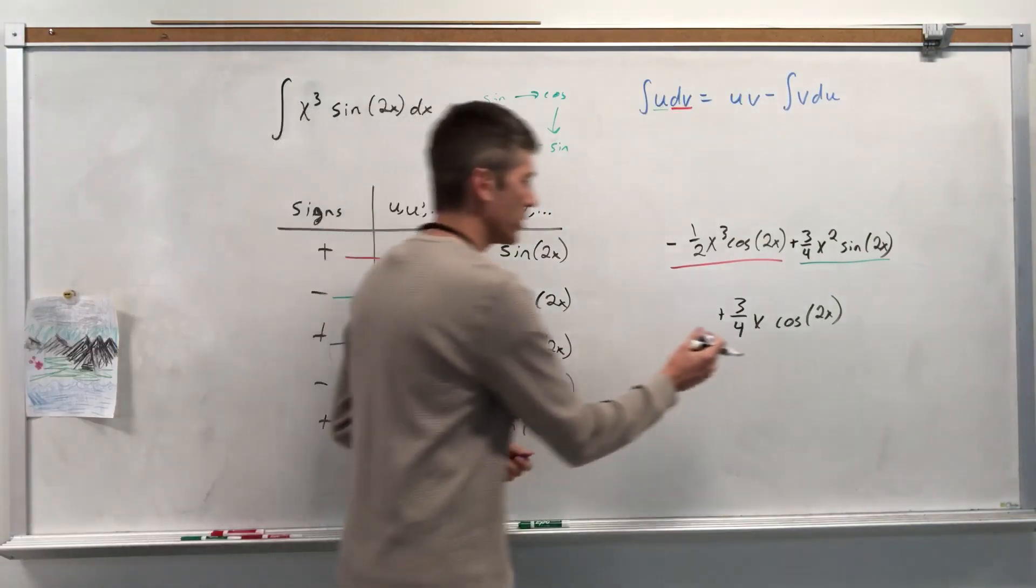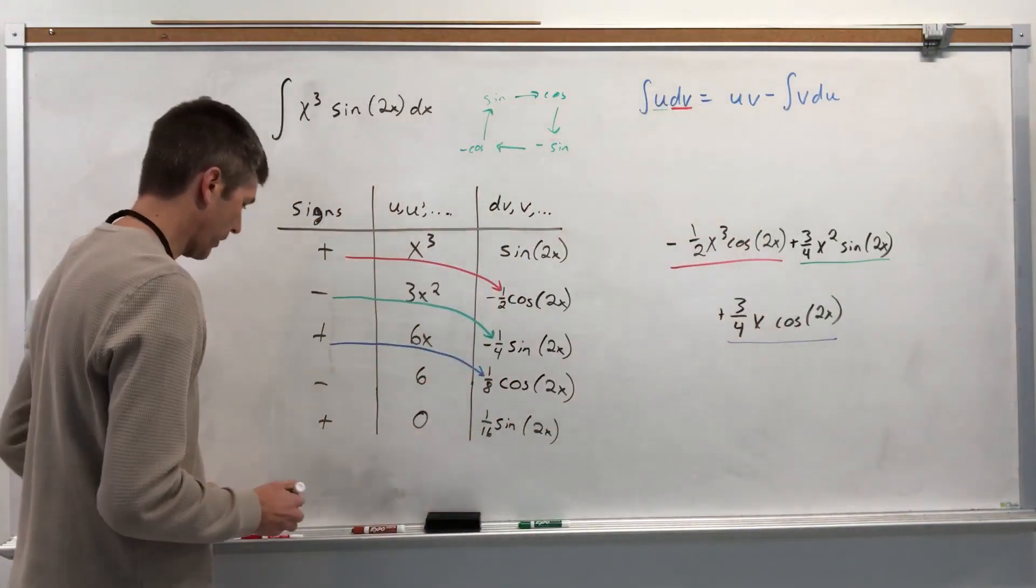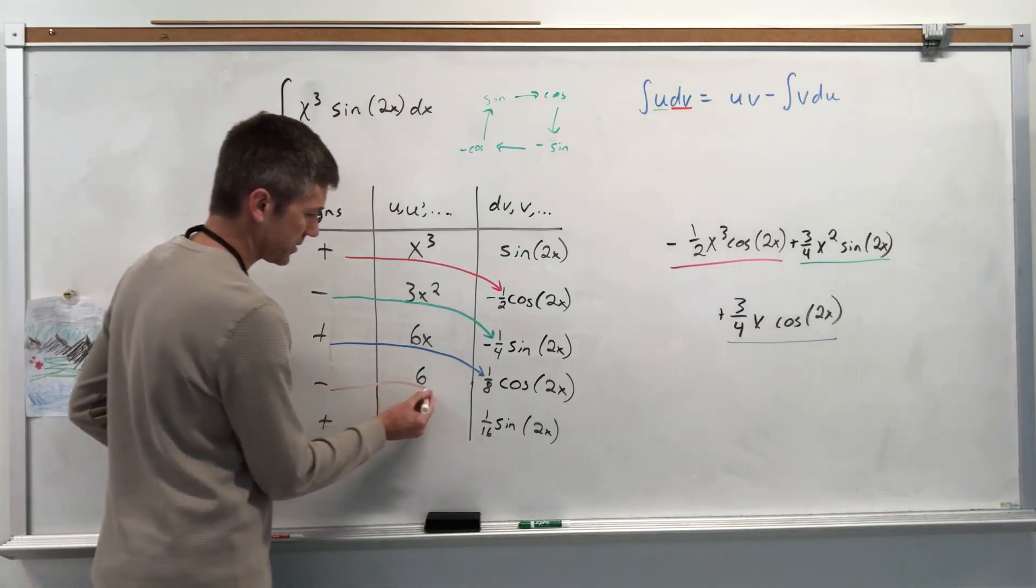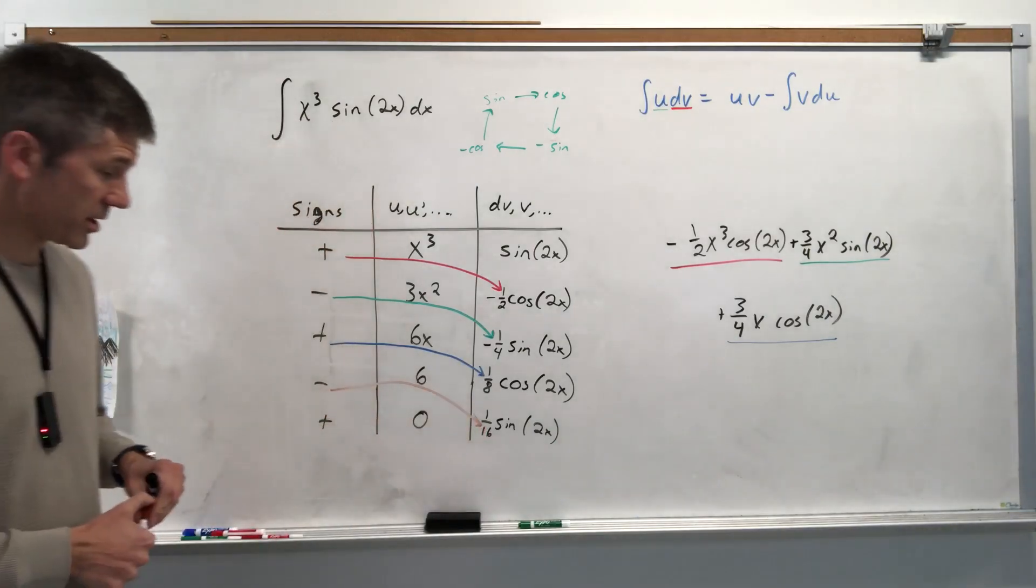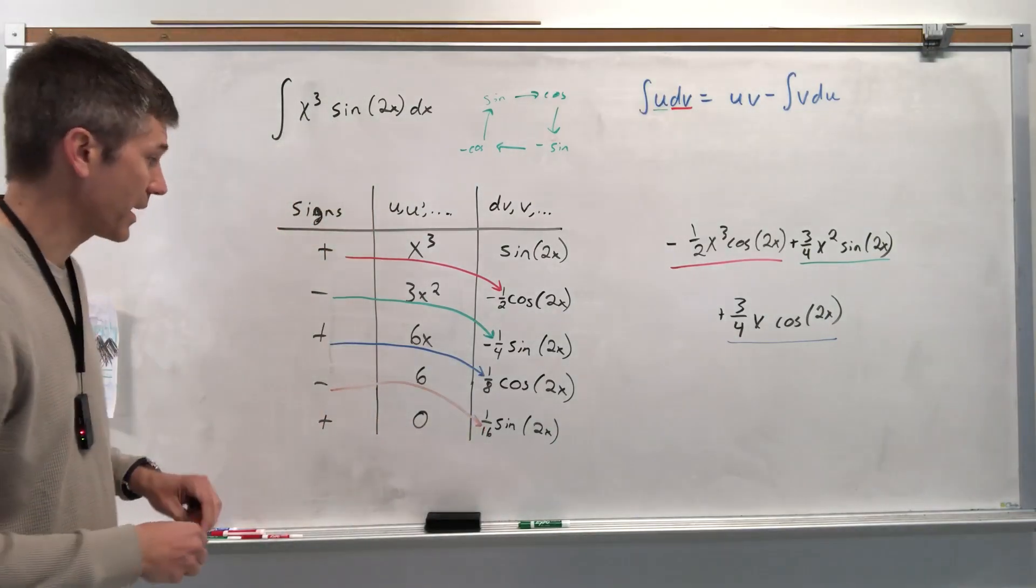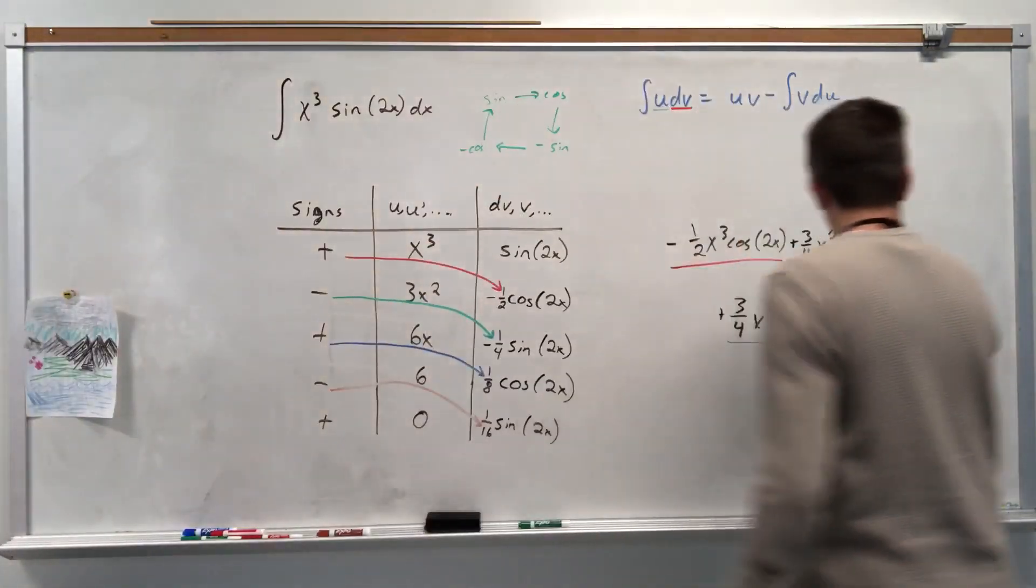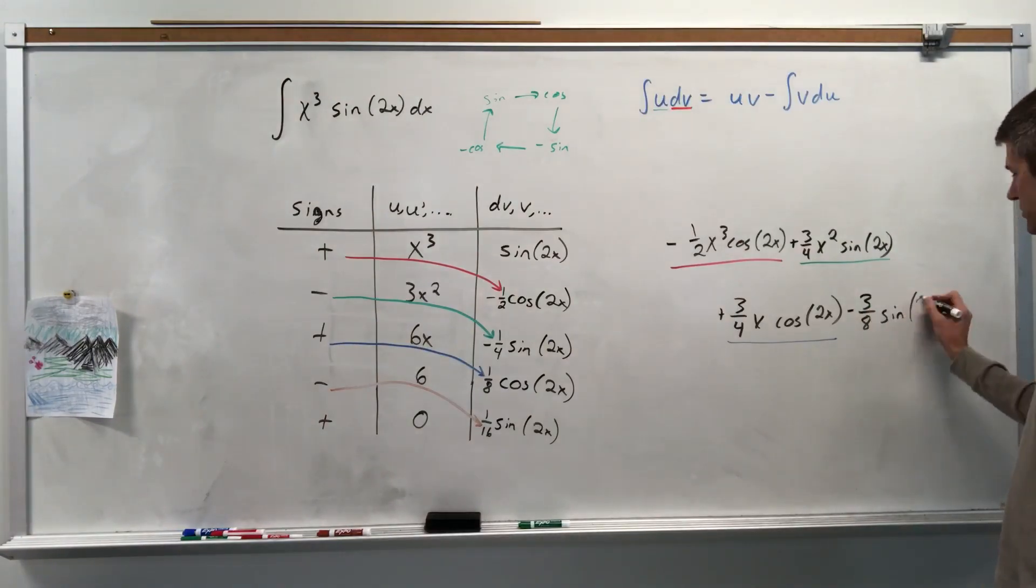And then one more answer. And then plus c. And that final term is negative 6 times 1 sixteenth. And that negative 6 over 16 is going to give me, let's reduce it, three eighths. So negative three eighths sine of 2x. And then plus c.